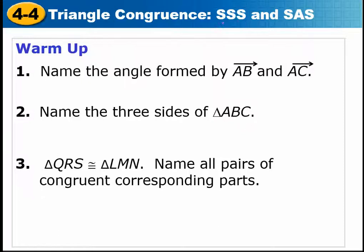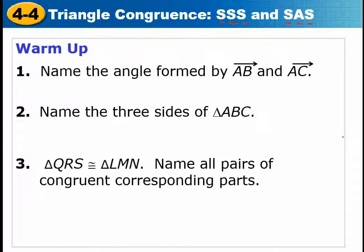The two methods we're going to use are SSS, which stands for Side-Side-Side, and Side-Angle-Side, or SAS for short. These are going to be much easier ways to show that you have two congruent triangles, rather than showing that every single corresponding angle is congruent and every single corresponding side is congruent.